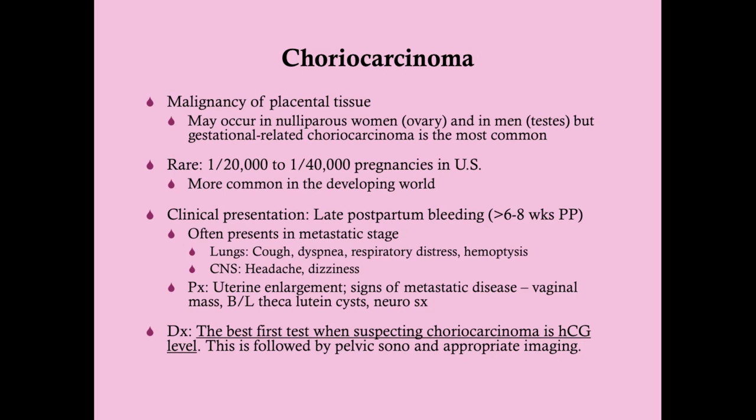This is a very bloody tumor, and that makes sense because the placenta is a very vascular organ — the point of the placenta is vascular exchange. There's lots of vasculature in the choriocarcinoma, and that will help you distinguish this on a sonogram. It is a rare tumor: approximately one in 20,000 to one in 40,000 pregnancies in the U.S. will be associated with a choriocarcinoma.